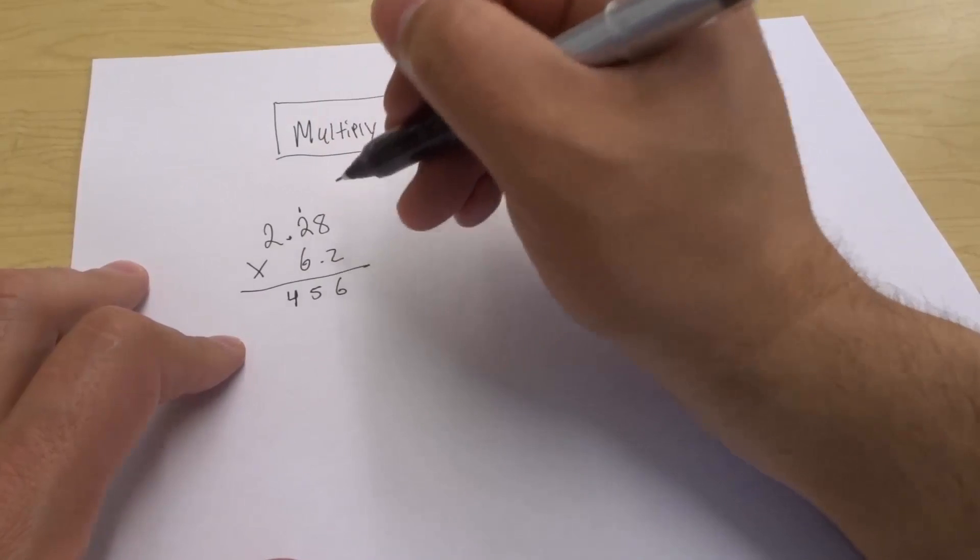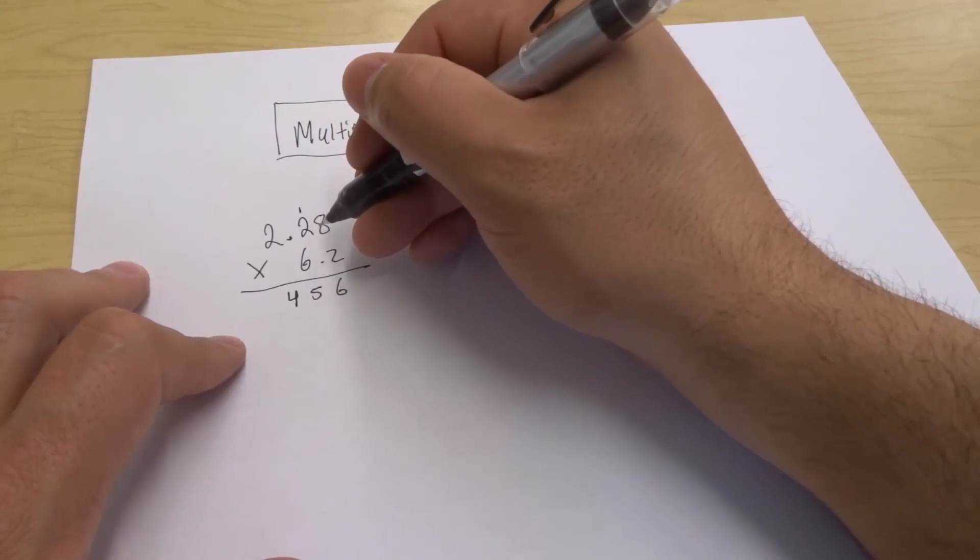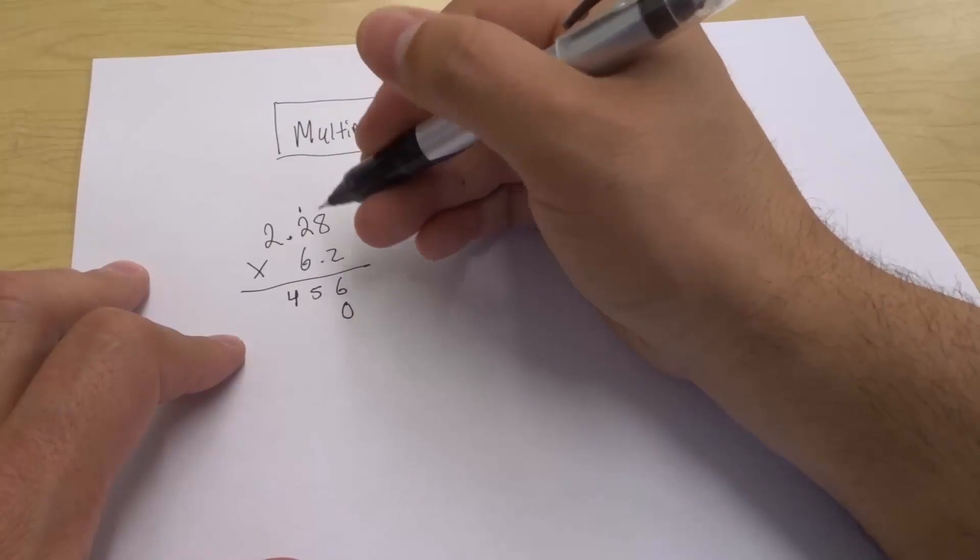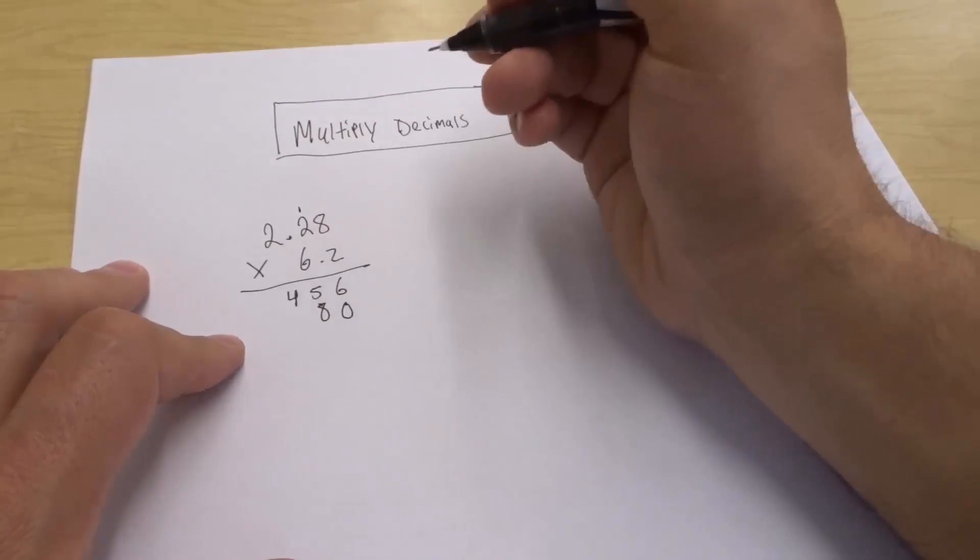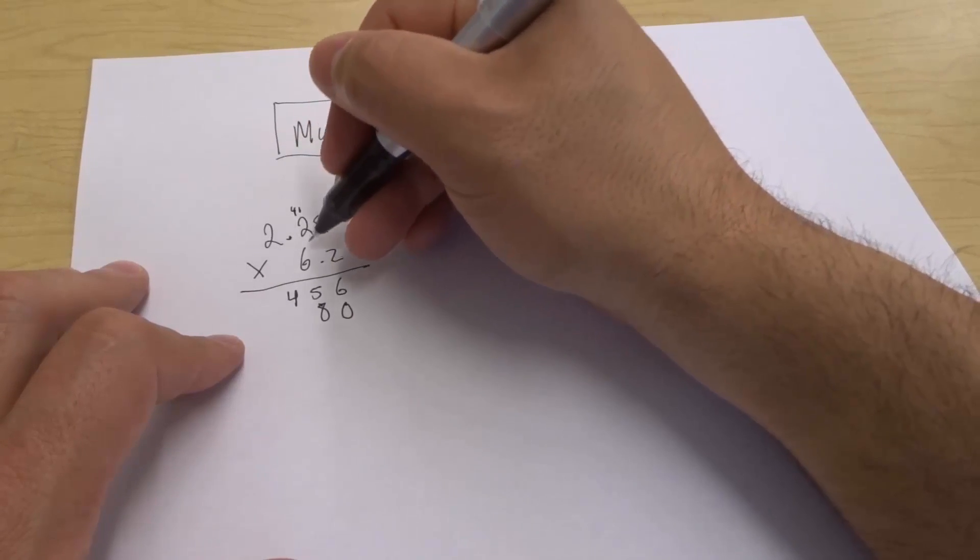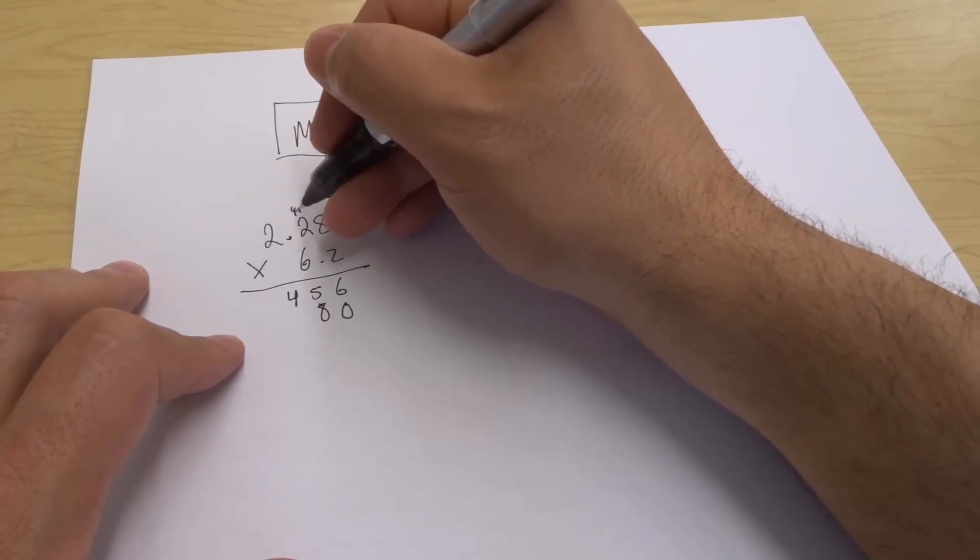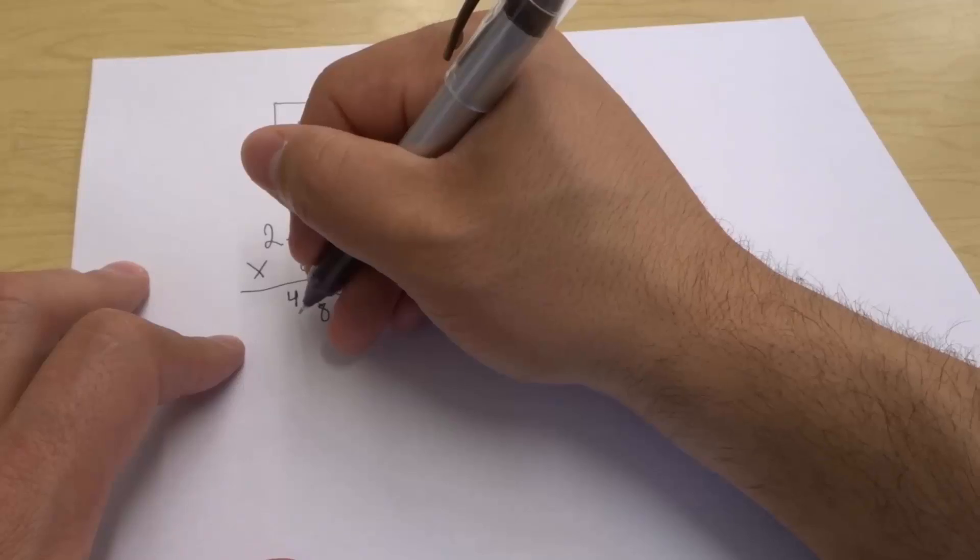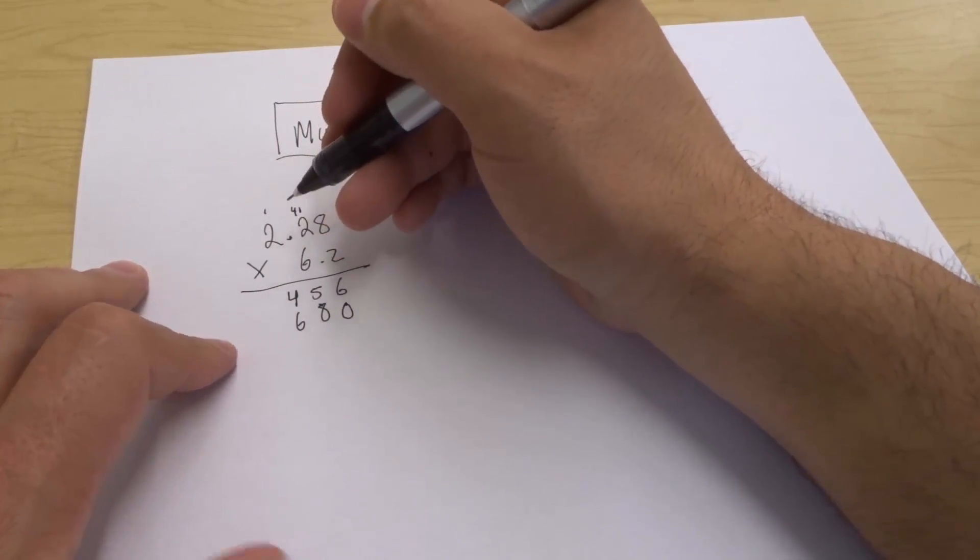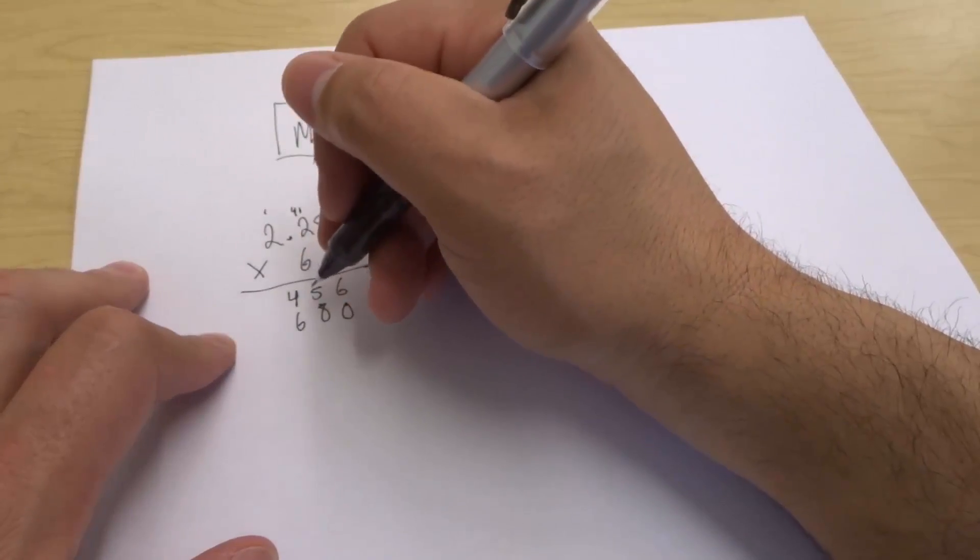Now we're going to multiply the 6. 6 times 8 gives us 48, but we have to start off by bringing the 0 over there. So 48, we put the 8 there and bring the 4 up here. 6 times 2 gives us 12 plus 4 gives us 16. Bring the 6 here and the 1 up there. 6 times 2 gives us 12 plus 1 gives us 13.